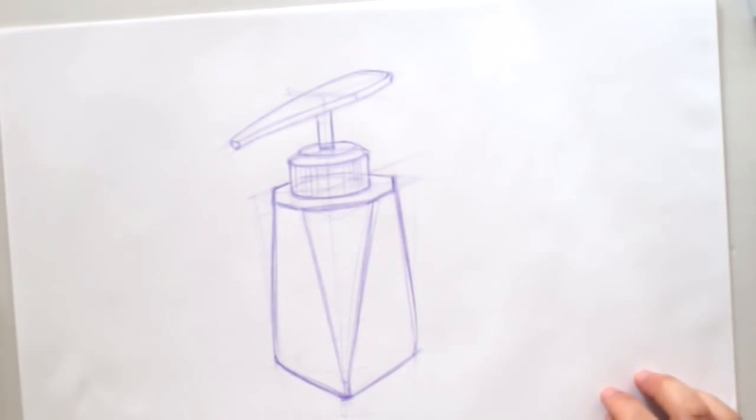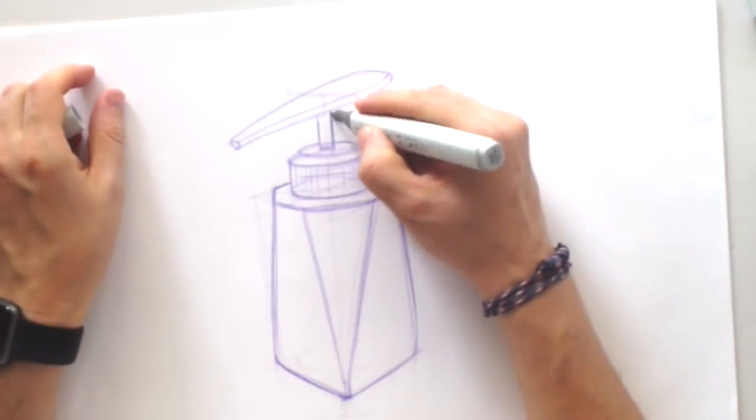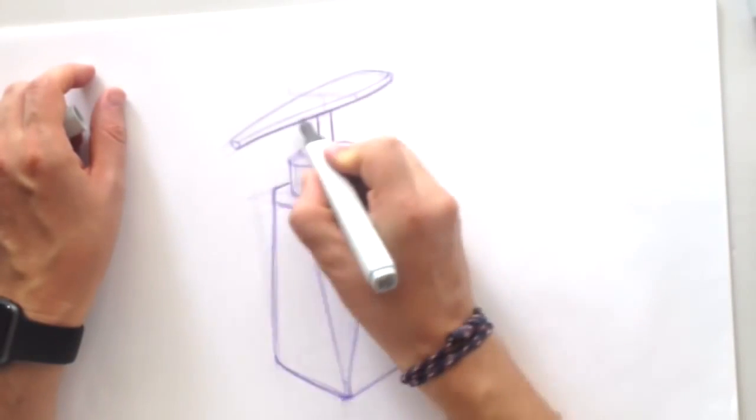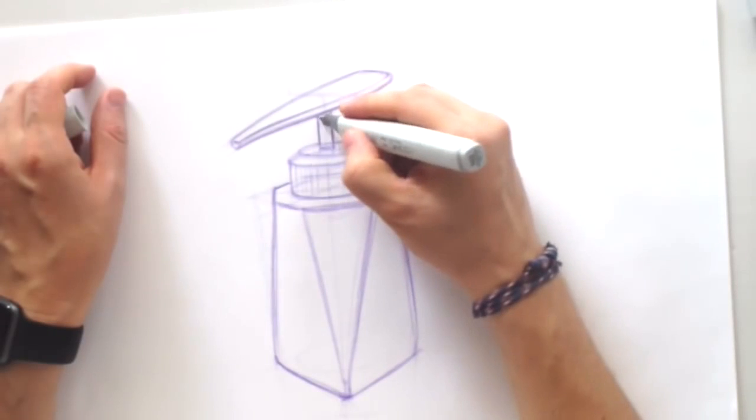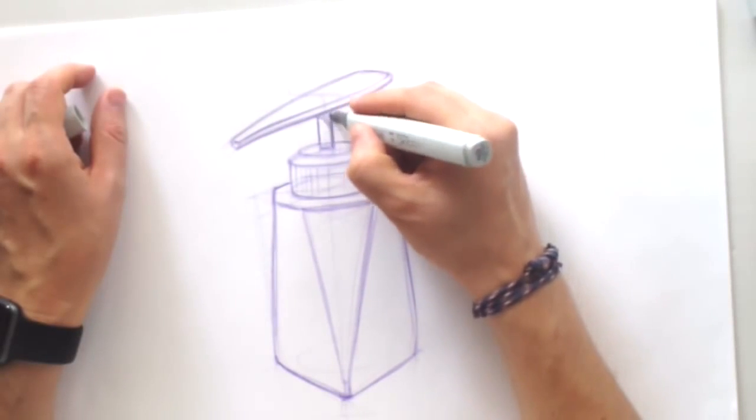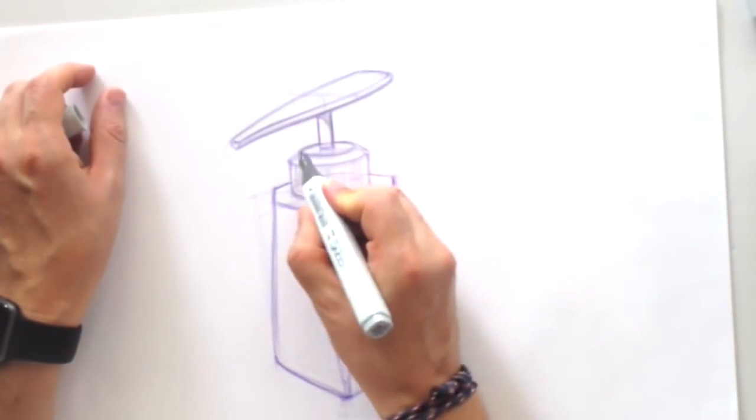Okay, so we have a general shape. Now let's start to make it more clear lines. Here I'm using the Copic marker, the thin part of the marker.